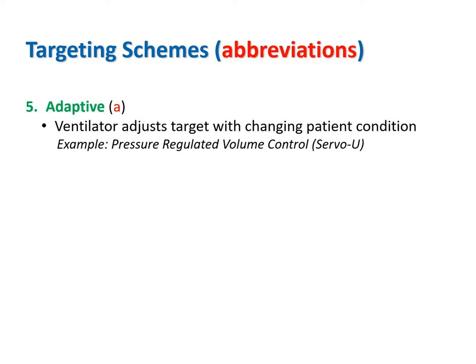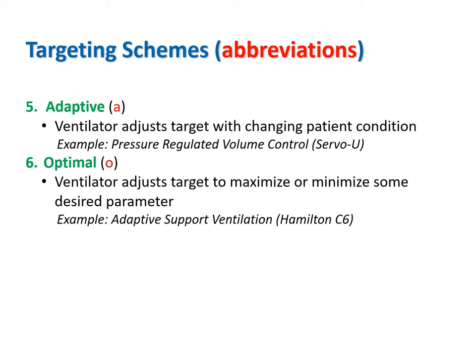Adaptive targeting means the ventilator automatically adjusts inspiratory pressure as lung mechanics change to achieve an average tidal volume equal to the preset target. For example, inspiratory pressure decreases as compliance increases or inspiratory effort increases. Optimal targeting means the ventilator uses adaptive targeting to select both an inspiratory pressure and frequency for mandatory breaths that minimizes the power transfer from the ventilator to the respiratory system—the same way the brain controls the ventilatory pattern to minimize caloric expenditure. Recent research suggests that minimizing power transfer may decrease the risk of ventilator-induced lung injury.